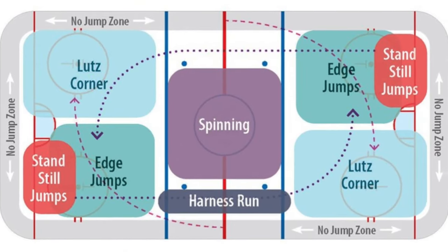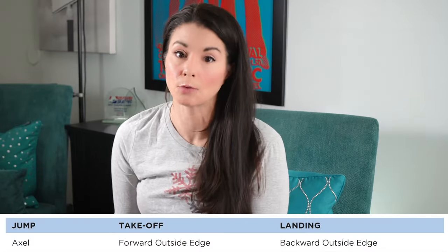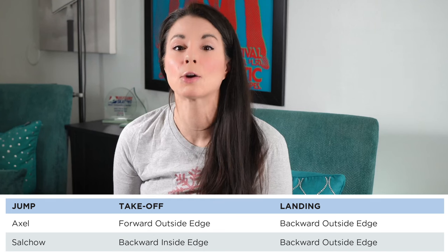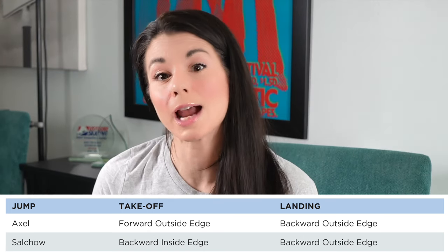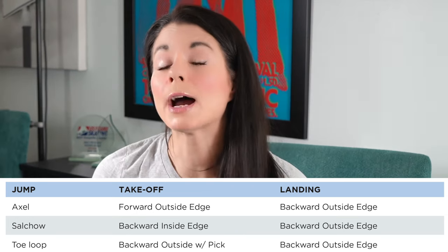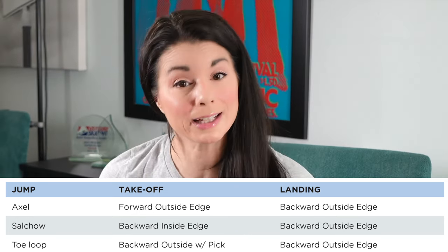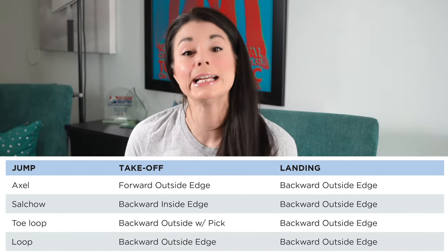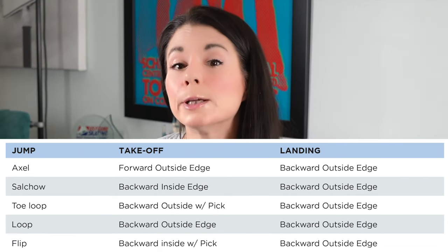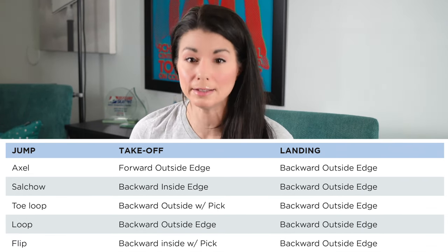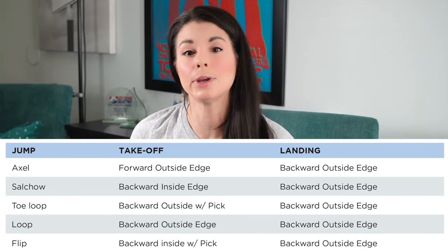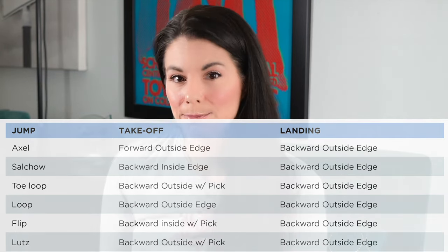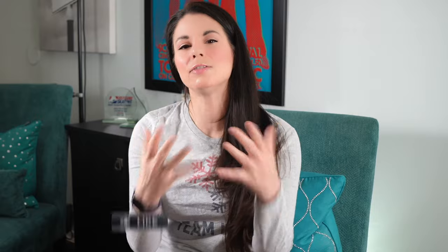To review: an Axel takes off from a forward outside edge and lands on a backward outside edge. The Salchow takes off from a backward inside edge, landing on the backward outside edge. A Toe Loop takes off from the backward outside edge with a toe tap, landing on the backward outside edge. Loop jumps take off from a backward outside edge and land on a backward outside edge. The Flip takes off on a backward inside edge with a toe tap, landing on a backward outside edge. The Lutz takes off on a backward outside edge with a toe tap and lands on a backward outside edge.